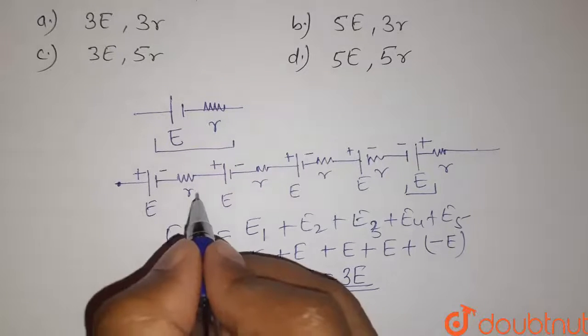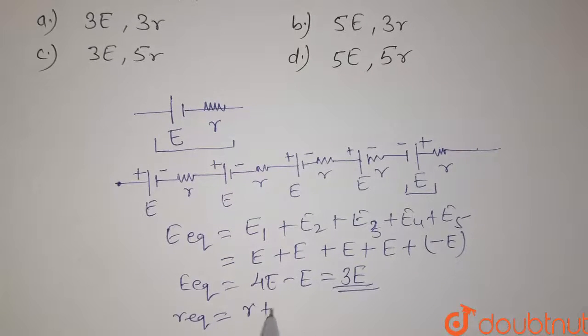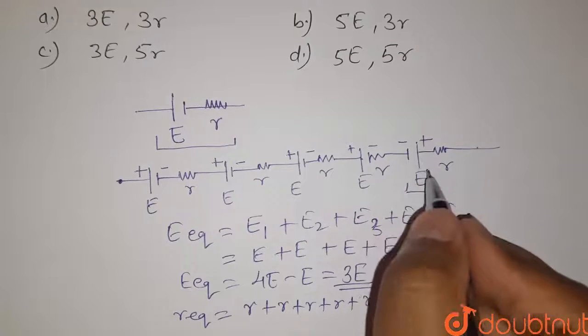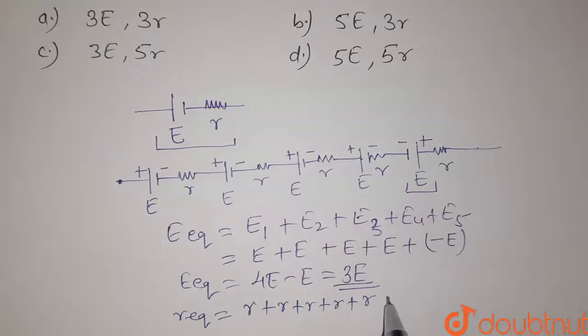Now for equivalent resistance, the resistances are in series, therefore R equivalent will be given by R1 that is R plus R2 plus R3 plus R4 plus R5. Here we don't have any problem with this opposite polarity of cell. So the equivalent resistance will be given by here 5R.